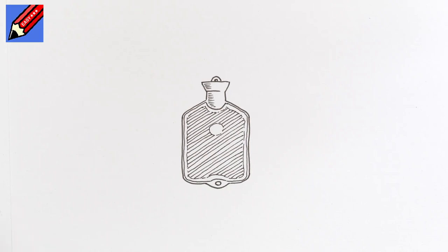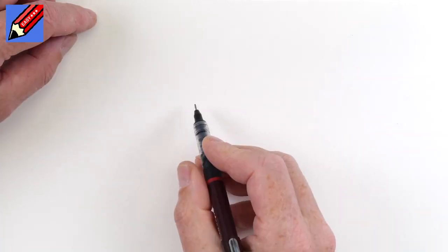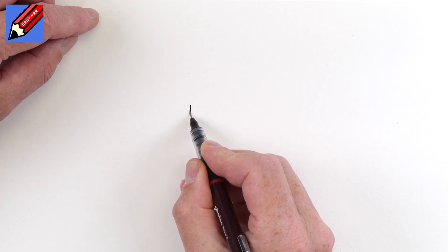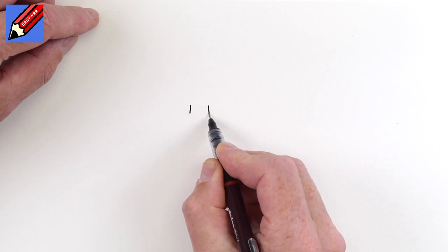How to draw a hot water bottle real easy. To draw a hot water bottle, start by drawing two little lines like that for the neck.